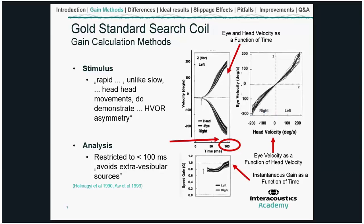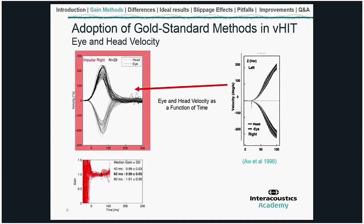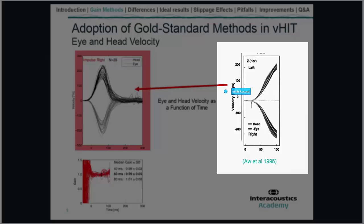During the development of the Interacoustics ICS cam system, we focused on adopting as much as possible the gold standard methods introduced with the search coil. In particular, we restricted all analysis to a similar time span of less than 100 milliseconds in order to avoid extra-vestibular signals. On the next slides I will walk you step by step through the individual methods we've implemented. First, we're plotting eye and head velocity traces as a function of time, in a similar way to search coil data analysis.